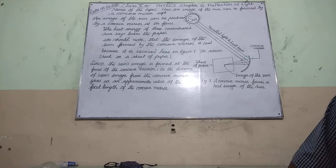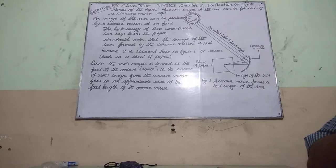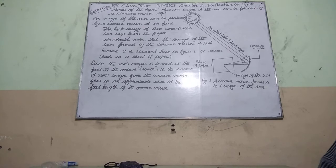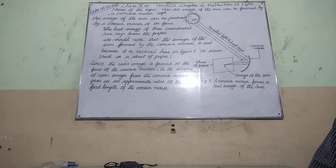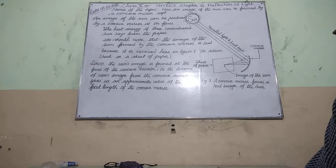To know how the sun's image is formed by a concave mirror, we have to perform a simple experiment. We should know the description of this experiment. The sun is at a far-off distance from us — we know this very well.